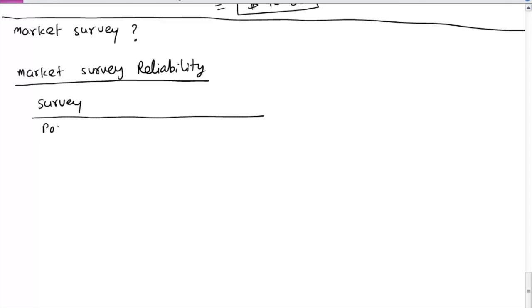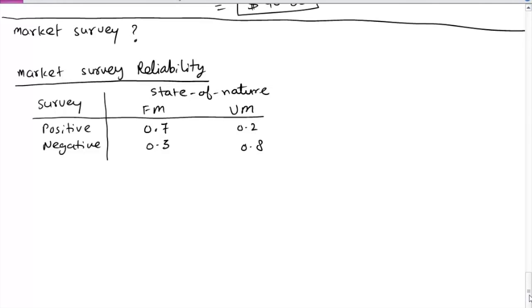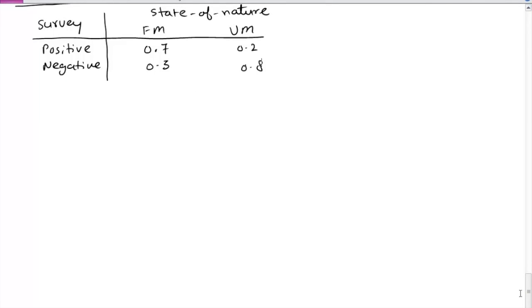Survey could be positive or negative and state of nature. So suppose the data is like this. Survey was positive and 0.7 means 70% of the time actually it turns out to be a favorable market. So survey said that the market is likely to be favorable and in reality that happens 70% of the time. Similarly, survey said the market conditions will be negative and it turned out 80% of the time that they were actually unfavorable. Obviously surveys may not be 100% accurate. So 20% of the time although the survey said the conditions will be positive it turned out to be an unfavorable market.